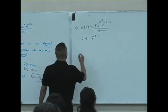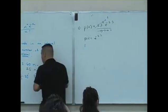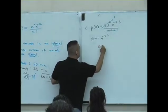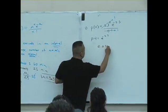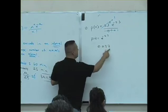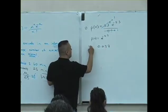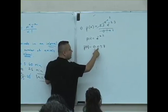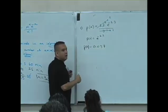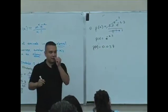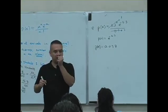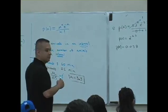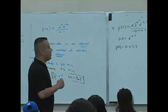0.037? Is this, give me the answer to the nearest thousandths. So it's seven, right? Everybody get this answer? Is it 0.037? Round it to the nearest thousandths. Is that what it is? You guys OK with this, p of zero?